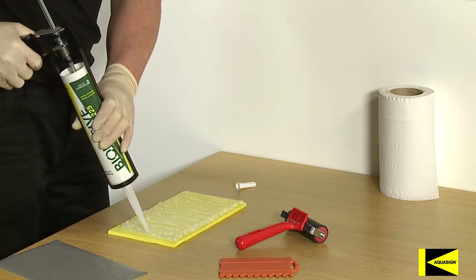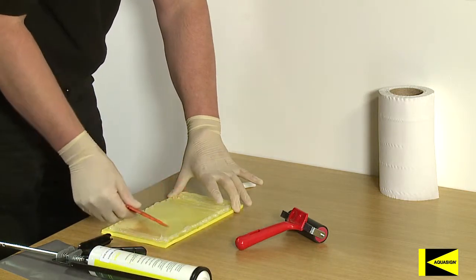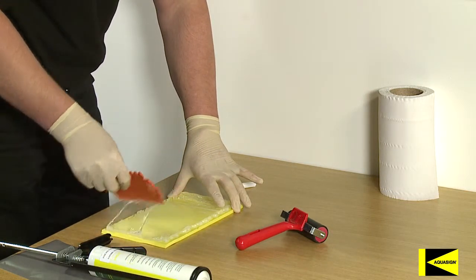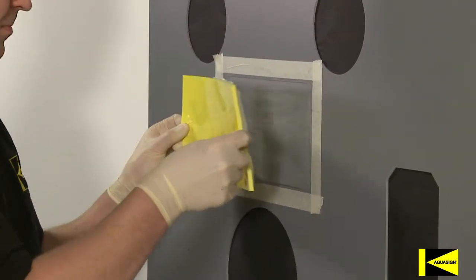Do not install the marker onto equipment if the bio-adhesive is skinned. Spread the adhesive evenly across the back of the marker using the tool provided to ensure bio-adhesive completely covers the back of the sign, particularly corner edges.